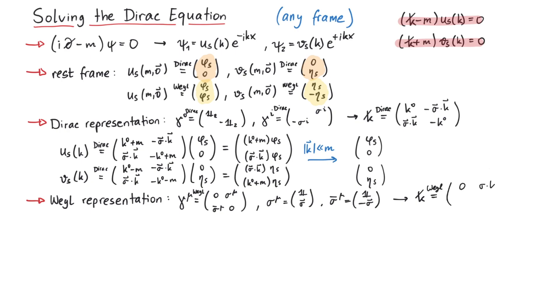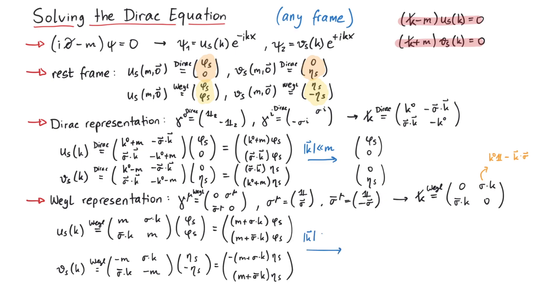The first step is again to write down k slash. Then, we add or subtract the mass times the identity matrix, and multiply this onto the rest frame solutions. The result looks like this. Again, not normalized. And in the limit of small velocities, we get the rest frame spinners again.